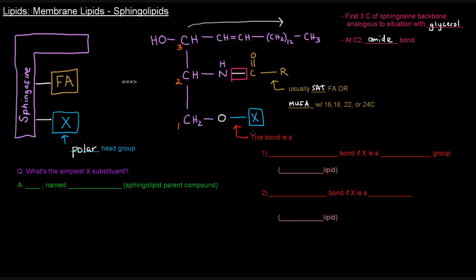So this bond here is pretty important. This bond is a phosphodiester bond if X is a phosphate group or contains a phosphate group. That would mean that this sphingolipid would be a phospholipid, because it would contain a phosphate group.